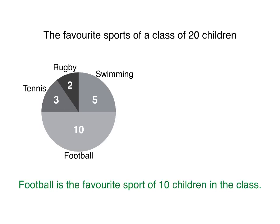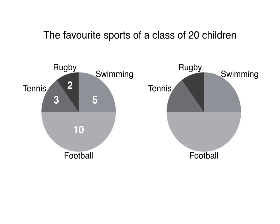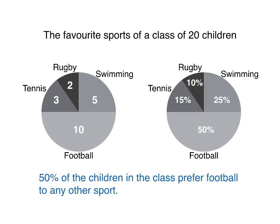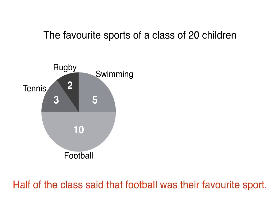Instead of numbers, the pie chart could show percentages. And then we could write: 50% of the children in the class prefer football to any other sport, or half of the class said that football was their favourite sport. But remember, even if you don't see the percentages, you can still say half of the class or 50% of the class.